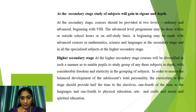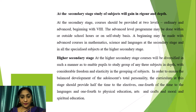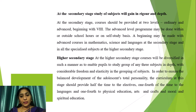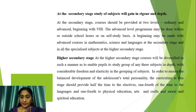At the higher secondary stage, courses will be diversified in such a manner as to enable students to study a degree group of any three subjects in depth, with considerable freedom and elasticity in the grouping of subjects. To ensure the balanced development of the adolescent's total personality, the curriculum at this stage should provide half the time to real electives, one-fourth of the time to languages, and one course each to physical education, arts and crafts, and moral and spiritual education.